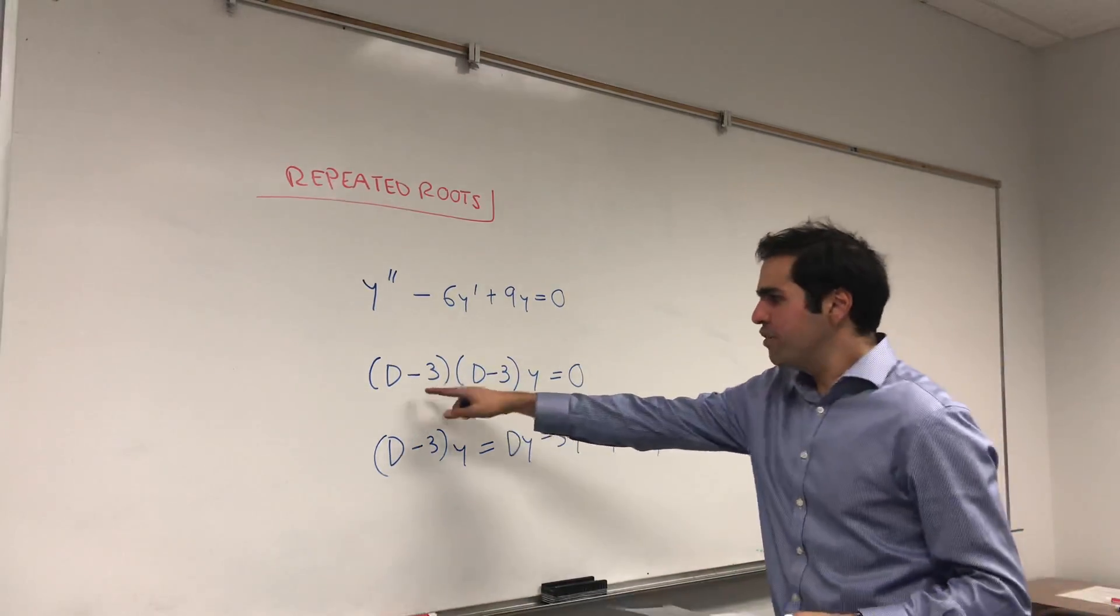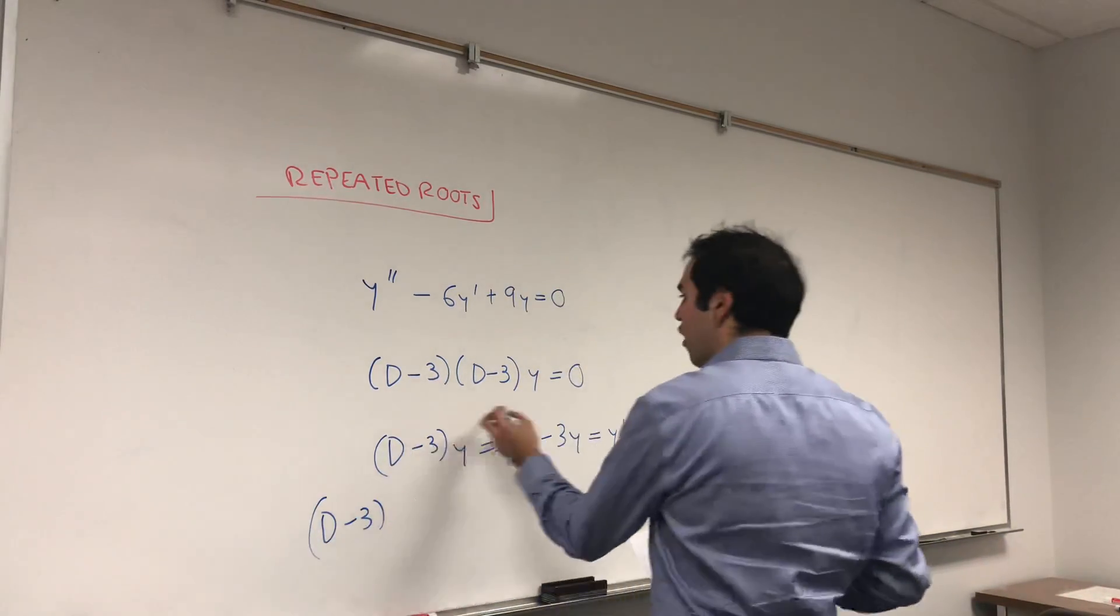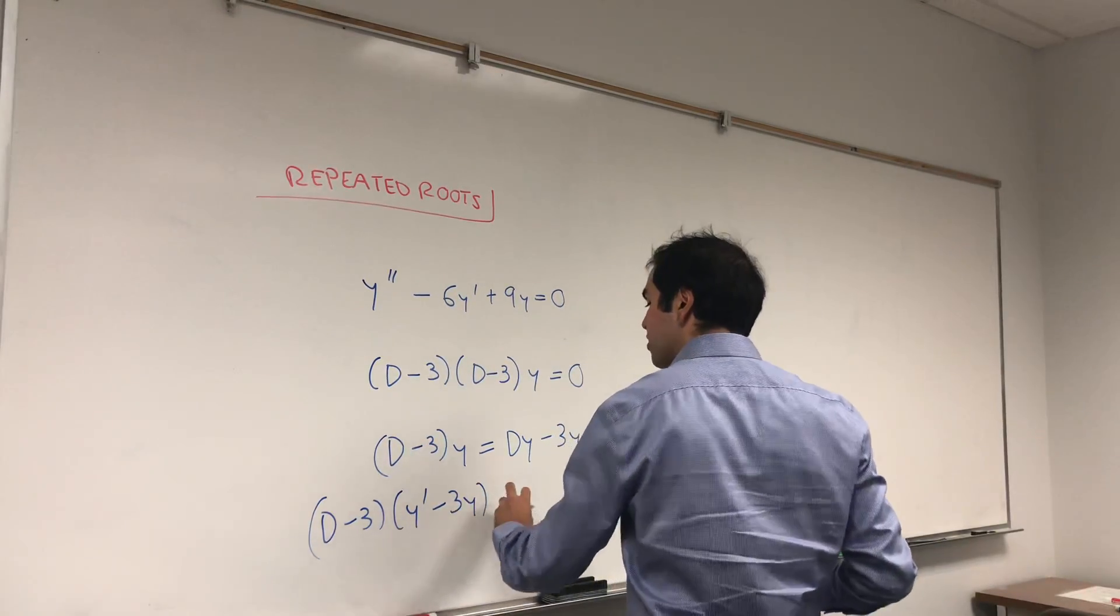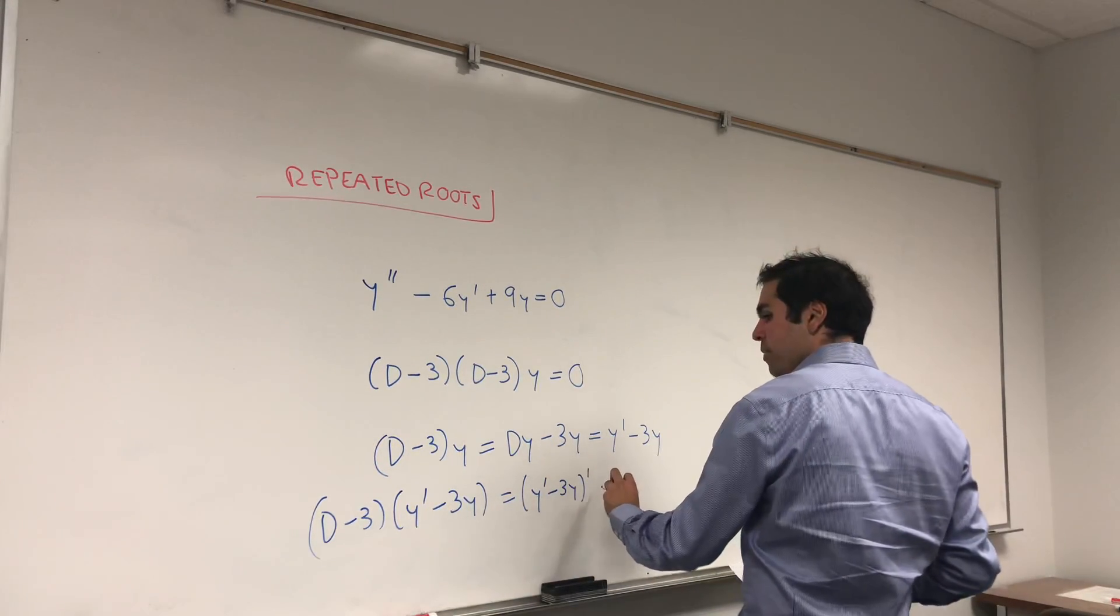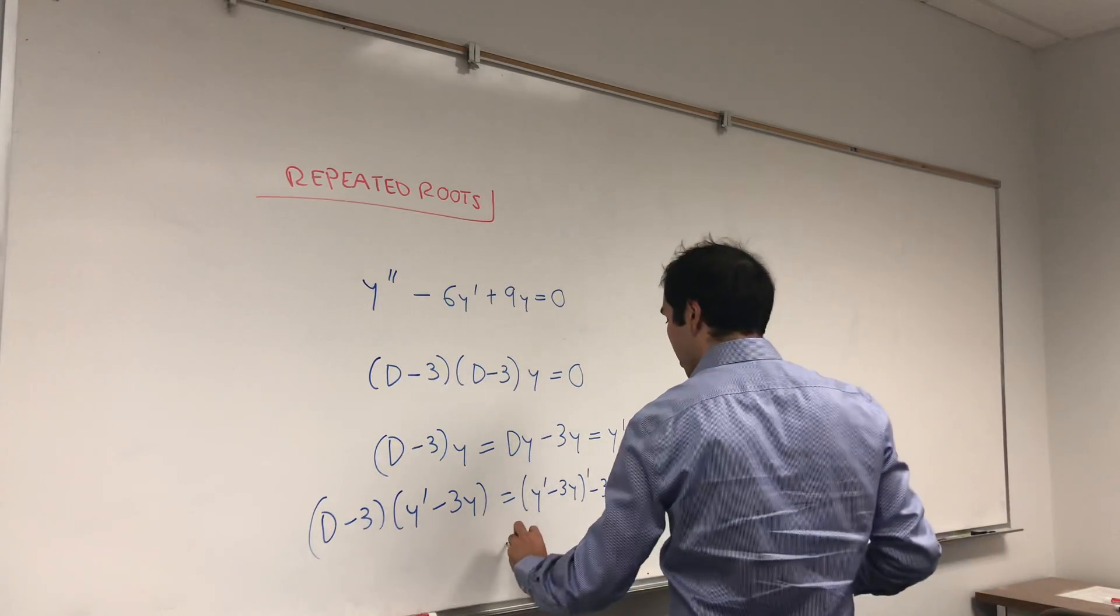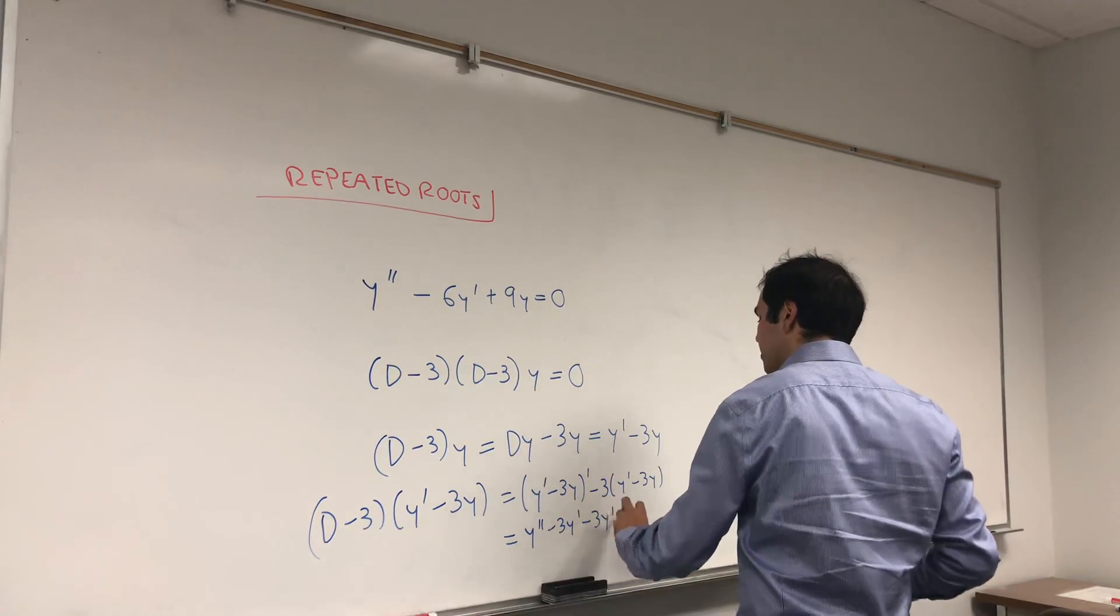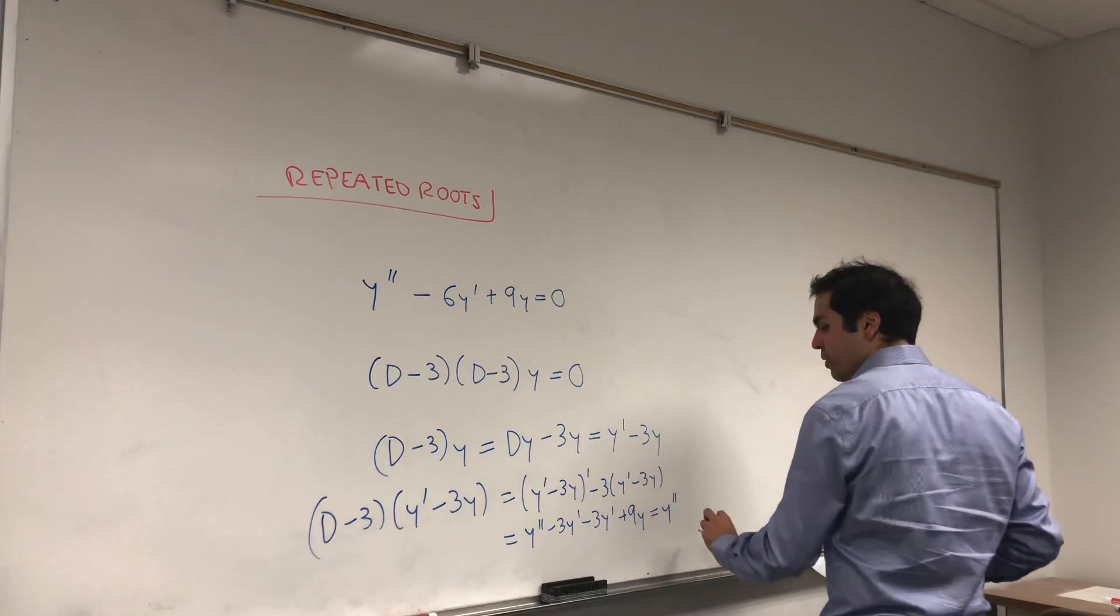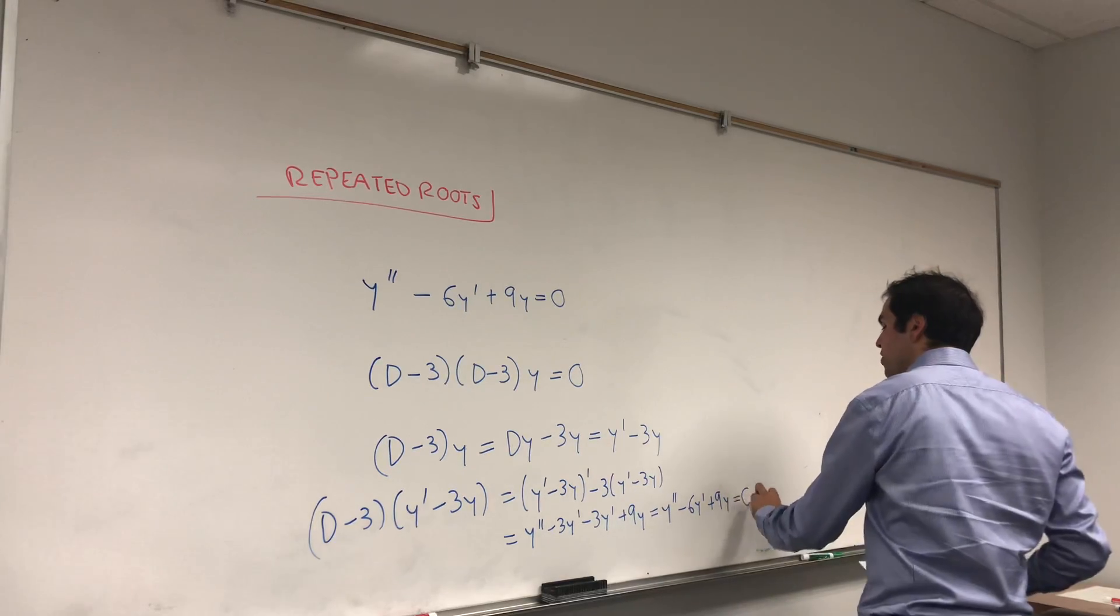And indeed, if you do d minus 3 of that, so if you do d minus 3 of d minus 3y, you get y prime d minus 3 of y prime minus 3y, so y prime minus 3y prime minus 3 times y prime minus 3y, and you get y double prime minus 3y prime minus 3y prime plus 9y, which indeed gives you the differential equation y double prime minus 6y prime plus 9y, which is zero.